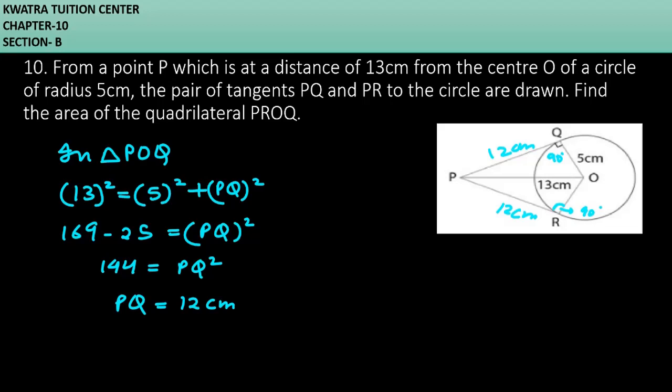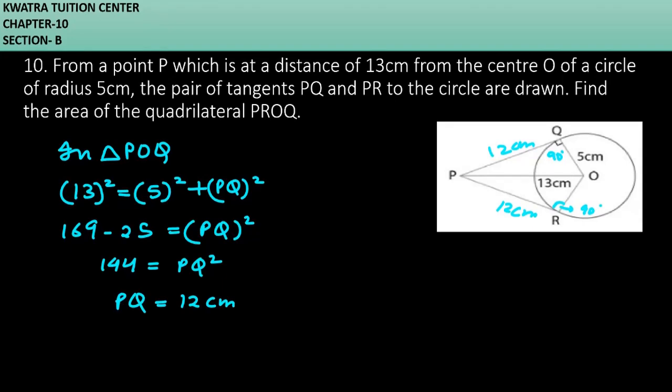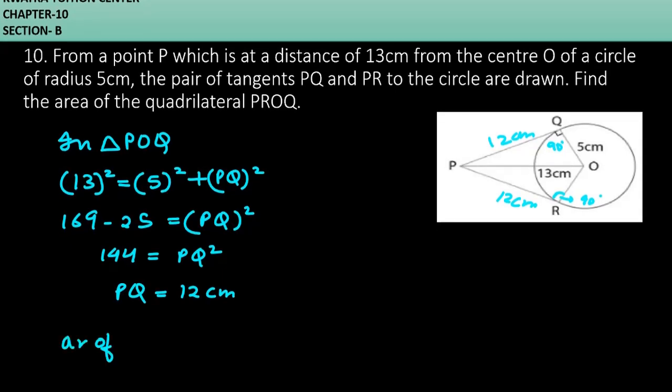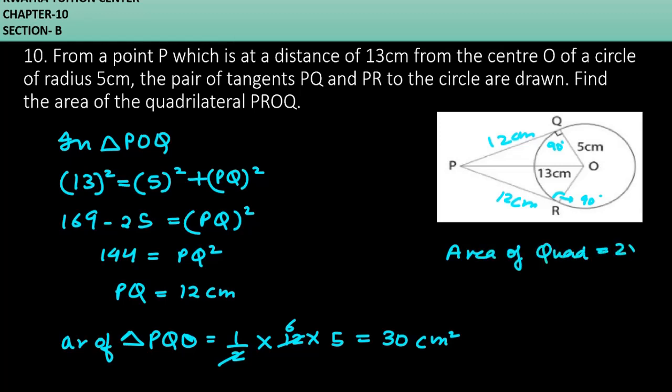Now what we can do is find the area of one of the triangles and it will be twice. Area of triangle PQO is equivalent to half base into height, which is half into 12 into 5, which gives you 30 cm squared. If you want to find the area of the quadrilateral, just twice it. 2 into 30 gives you 60 cm squared. So yes, this is your answer for question number 10.